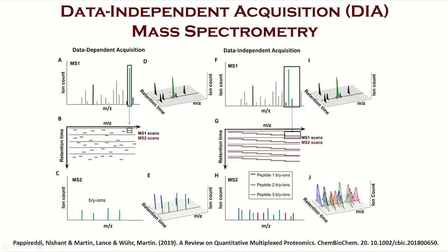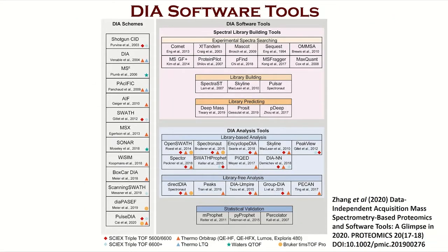For example, a peptide shown in red might not get detected by data-dependent acquisition, but might get detected because of the approach taken by data-independent acquisition. Due to the complexity of the data, particularly ion information from multiple peptides and the need to parse out quantitative information from the continuous data acquisition across the elution profile, many bioinformatics tools have been developed.